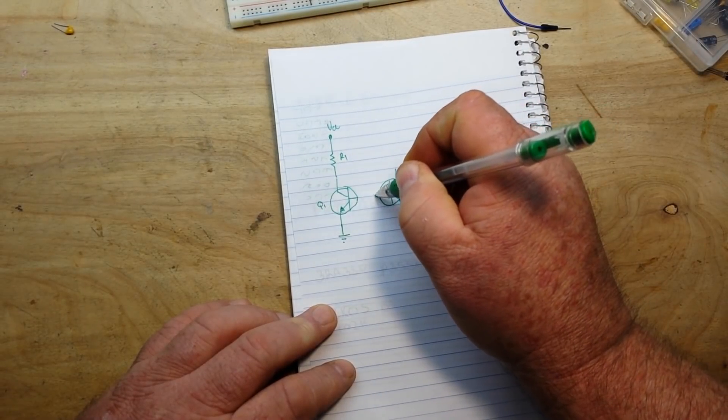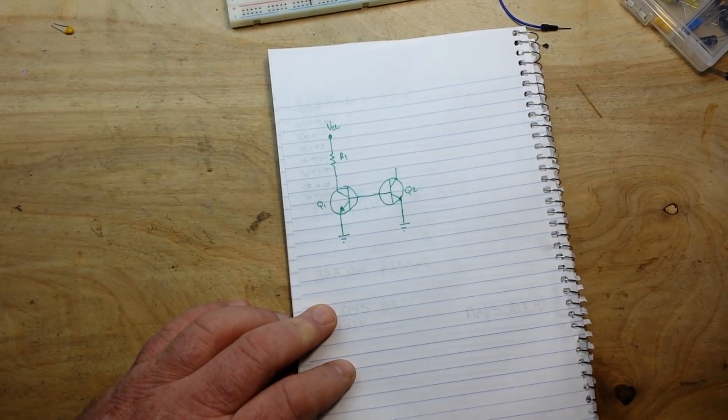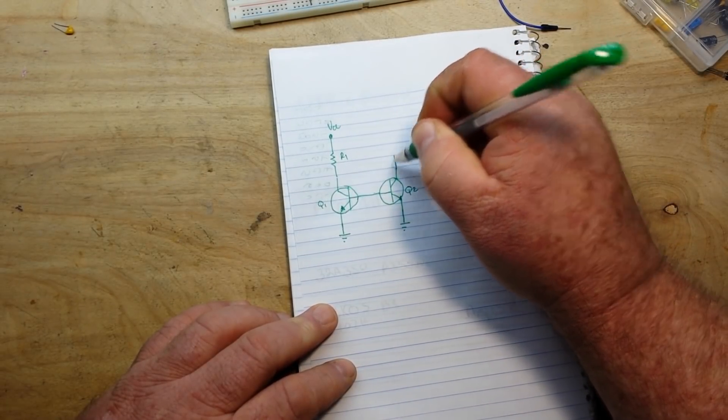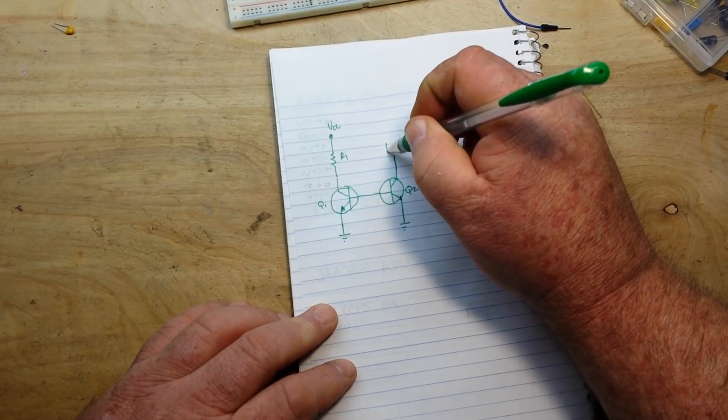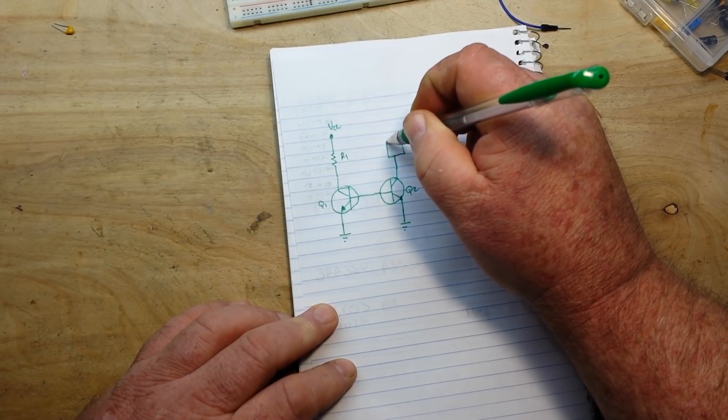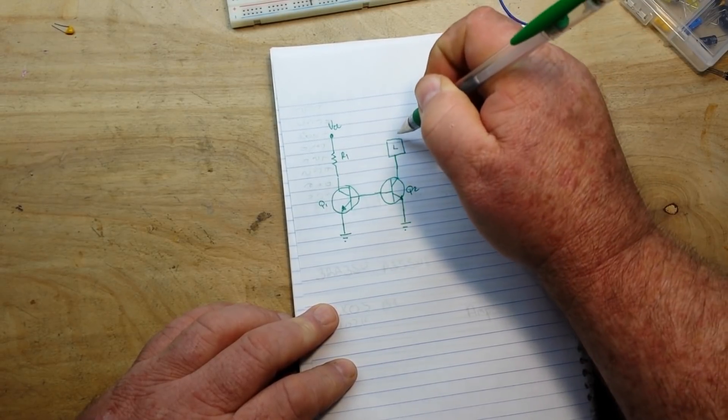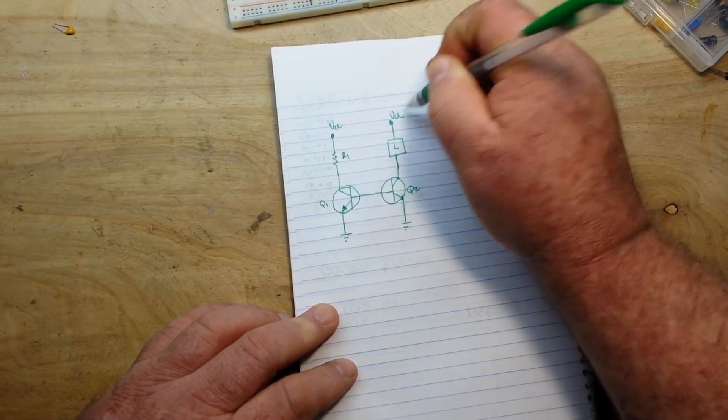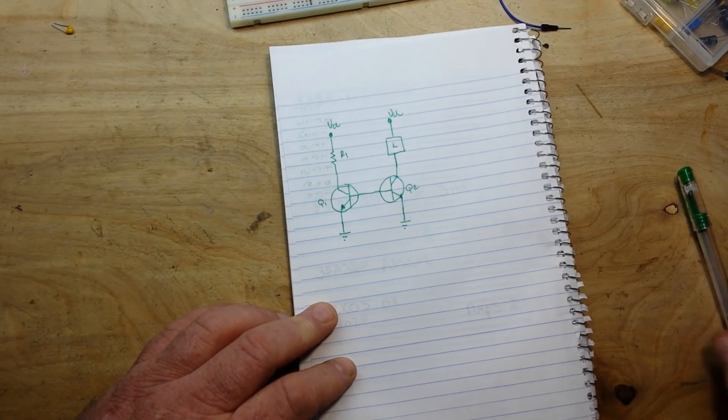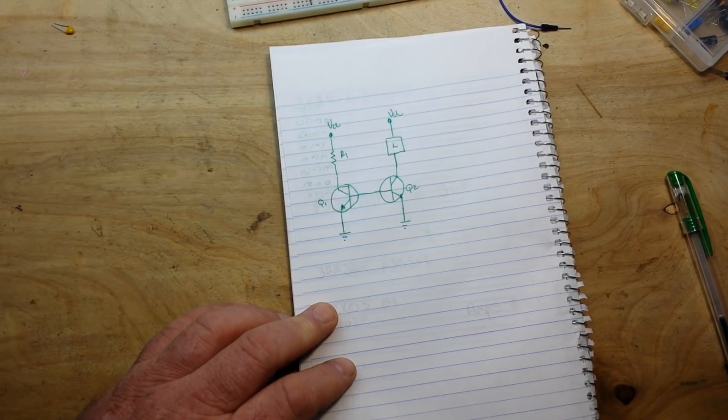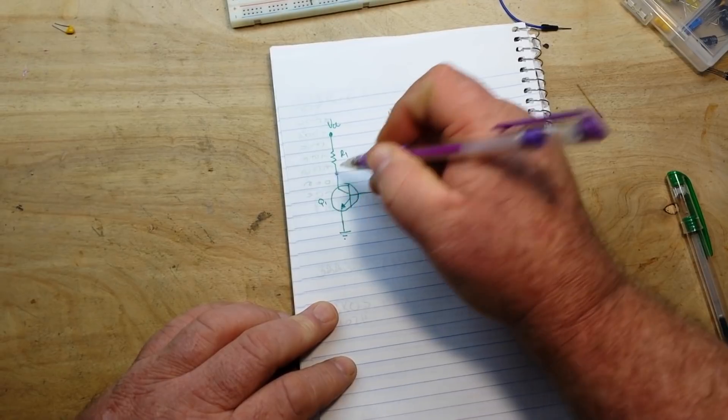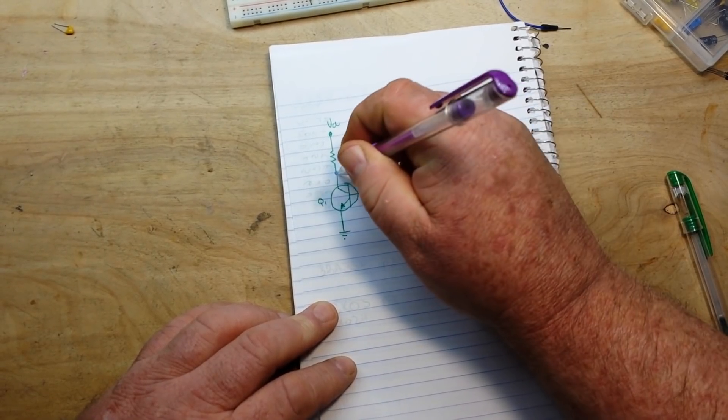The emitter of Q2 also goes directly to ground and their bases are tied together. Now in place of R1 on Q2 is where we put our load.